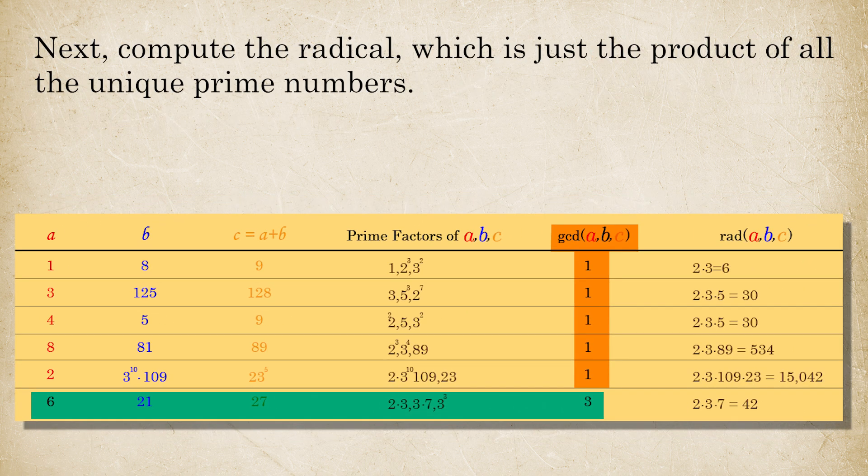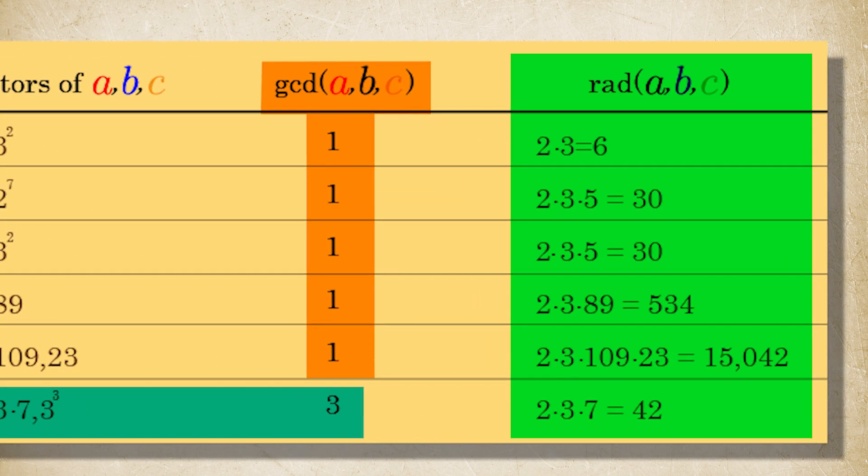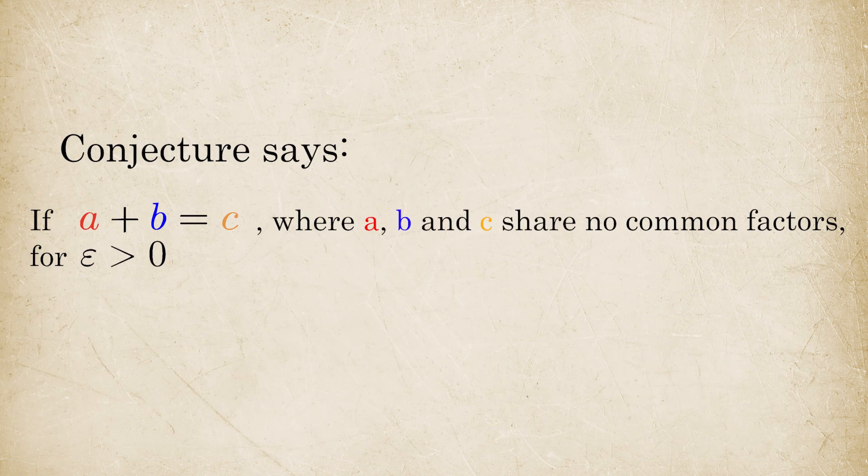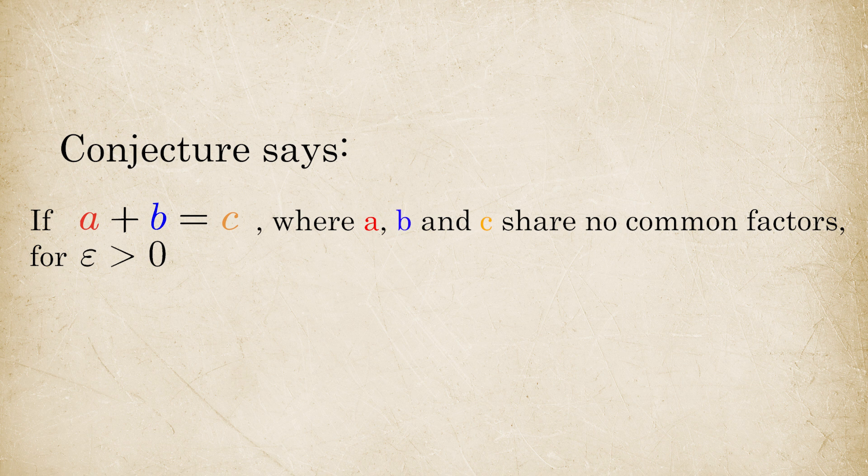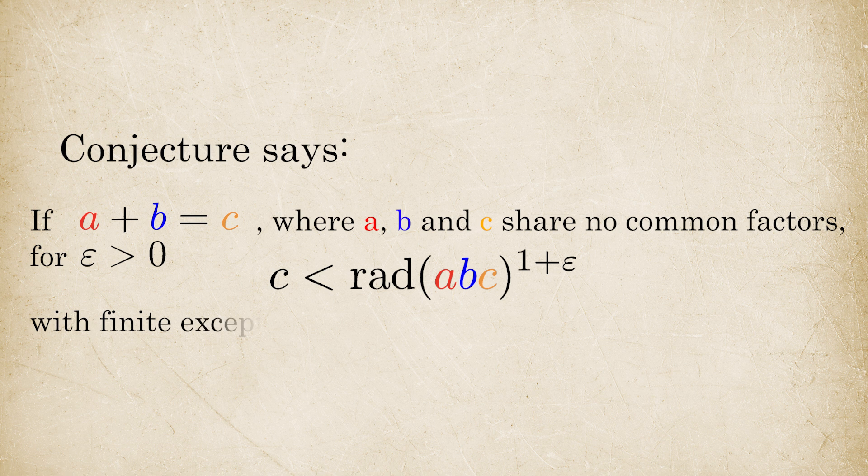Next, we need to compute the radical, which is just the product of all the unique prime numbers. Now comes the punchline. For every epsilon greater than 0, the radical of the ABC raised to the power 1 plus epsilon is greater than C, with finite exceptions.